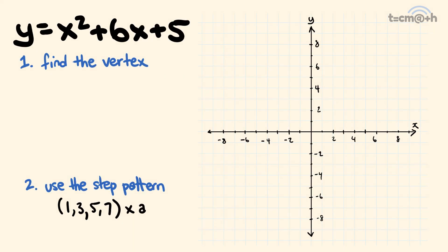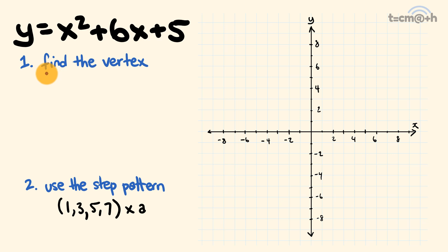So to the first example, nice and easy: we have y equals x squared plus 6x plus 5. We're going to graph this using these two easy steps. First off, we're going to find the vertex. The way we do that is we first find the x-coordinate of the vertex using a formula, and then use that value to find the y-coordinate of the vertex.